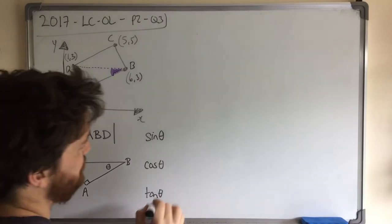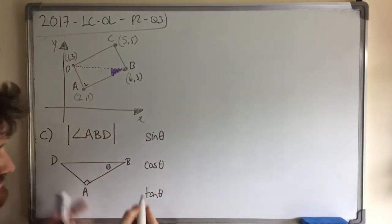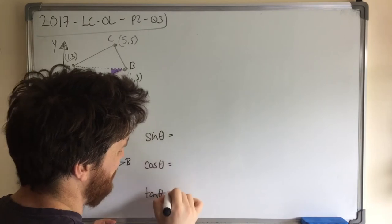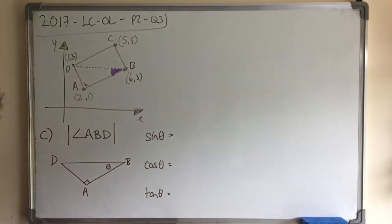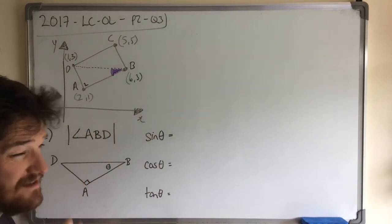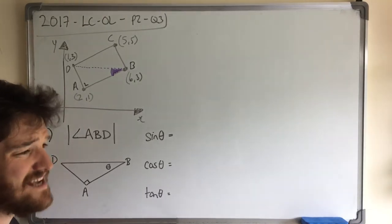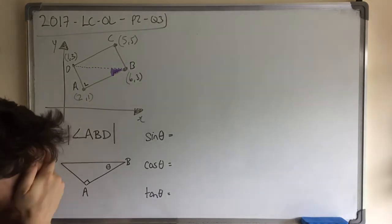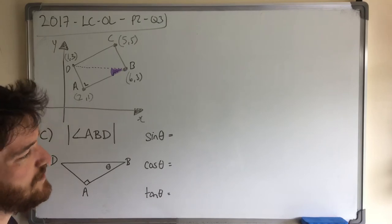So you can call it X or Y, but I'm just going to call it Theta because that's what we use. Now, what are our rules for sine, cos and tan? They are on the log tables and I'll be honest with you, they're confusing. Because they use A's and B's and I just don't like it. It upsets me. So what I've said is I learn a mnemonic to remember them.